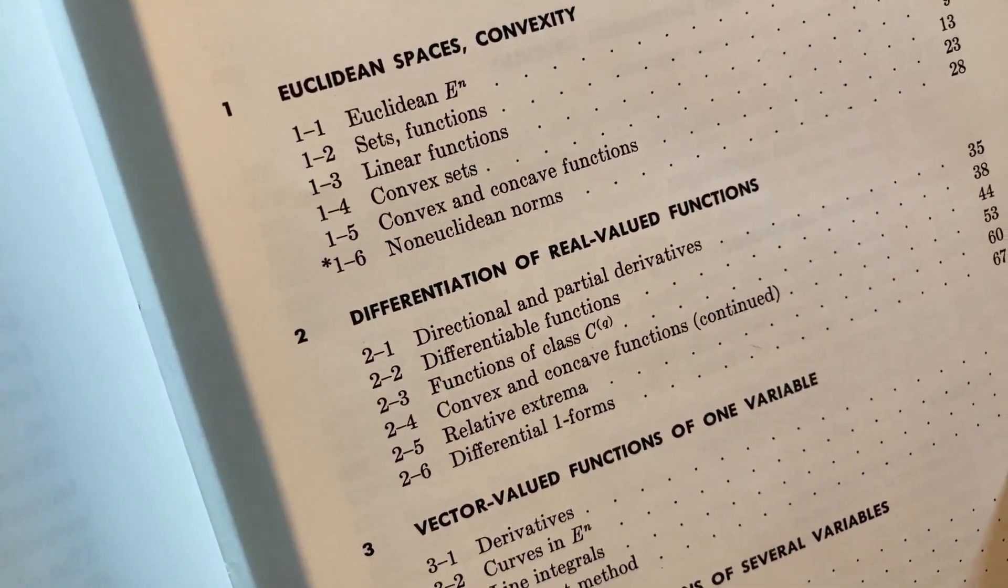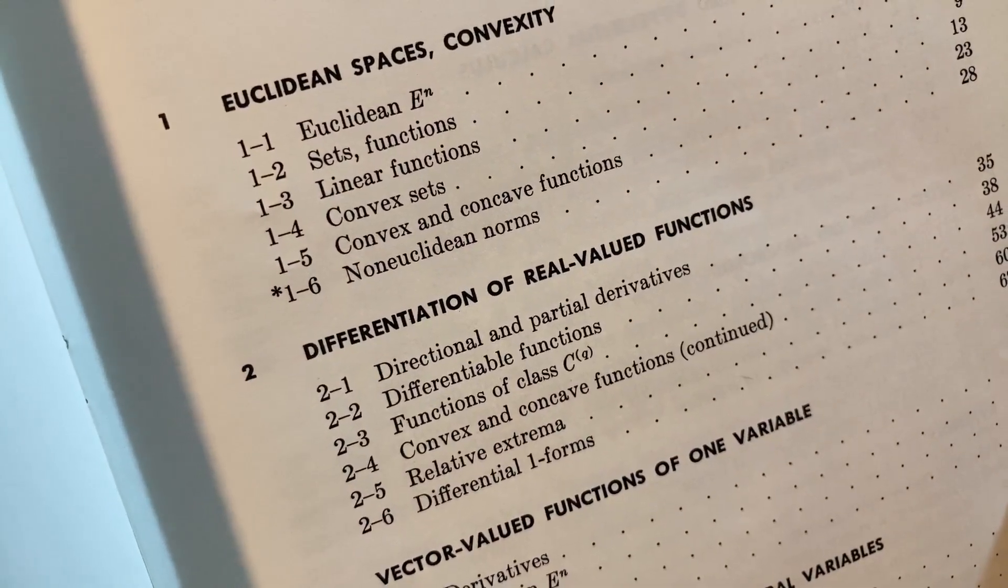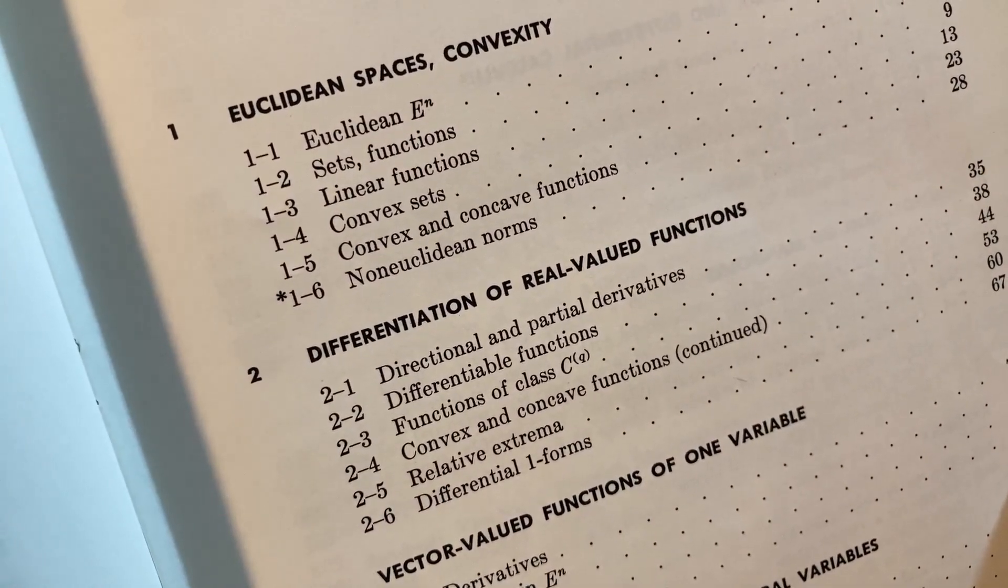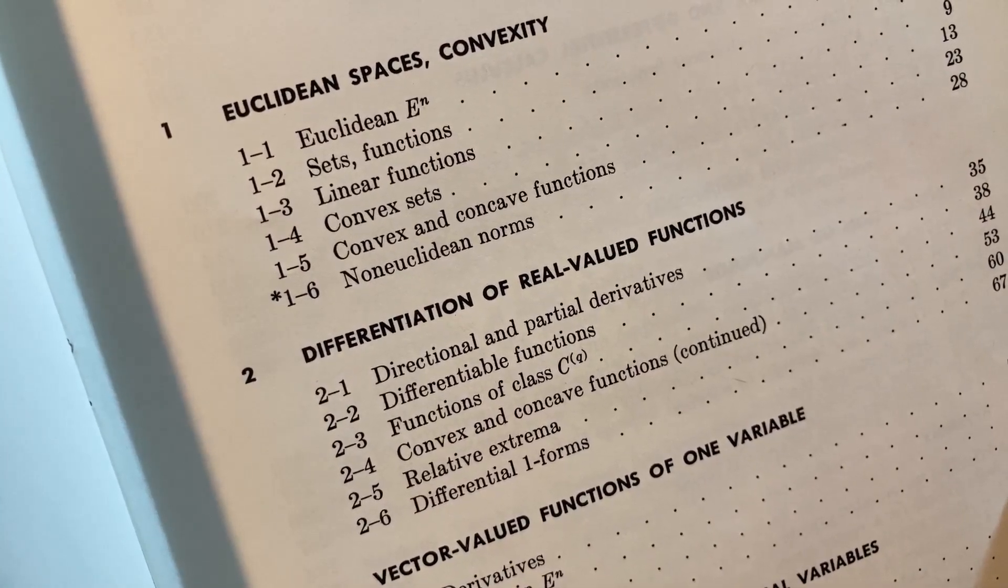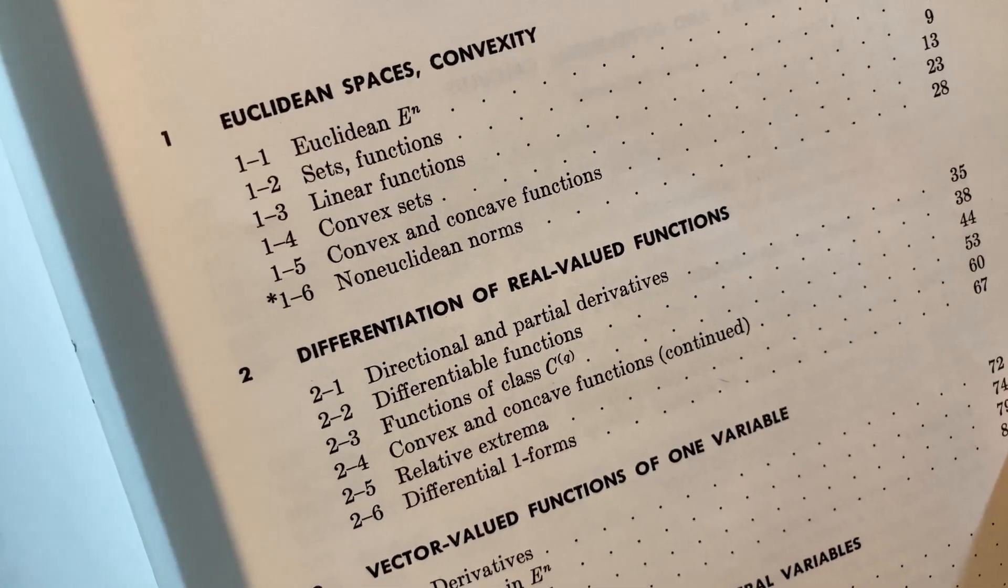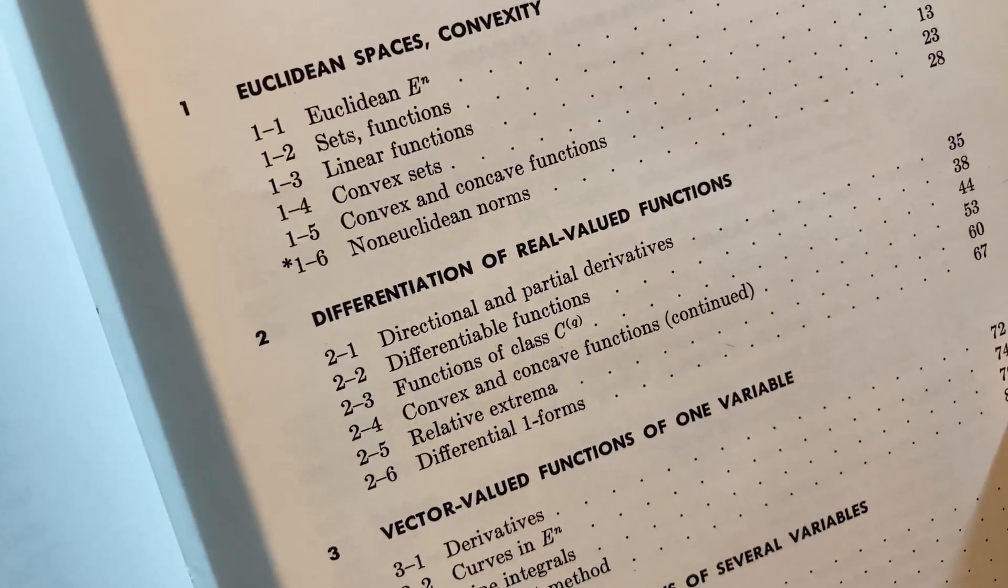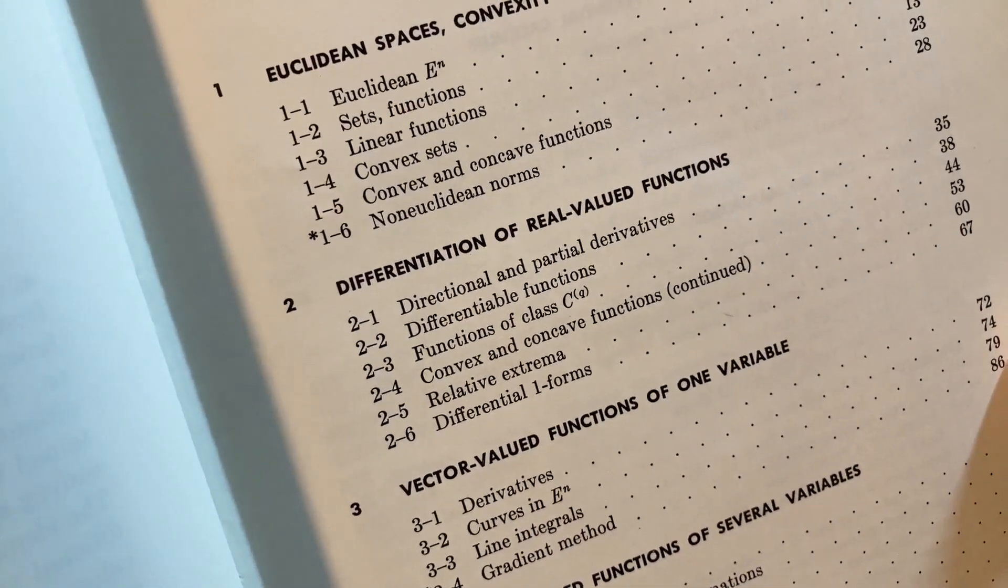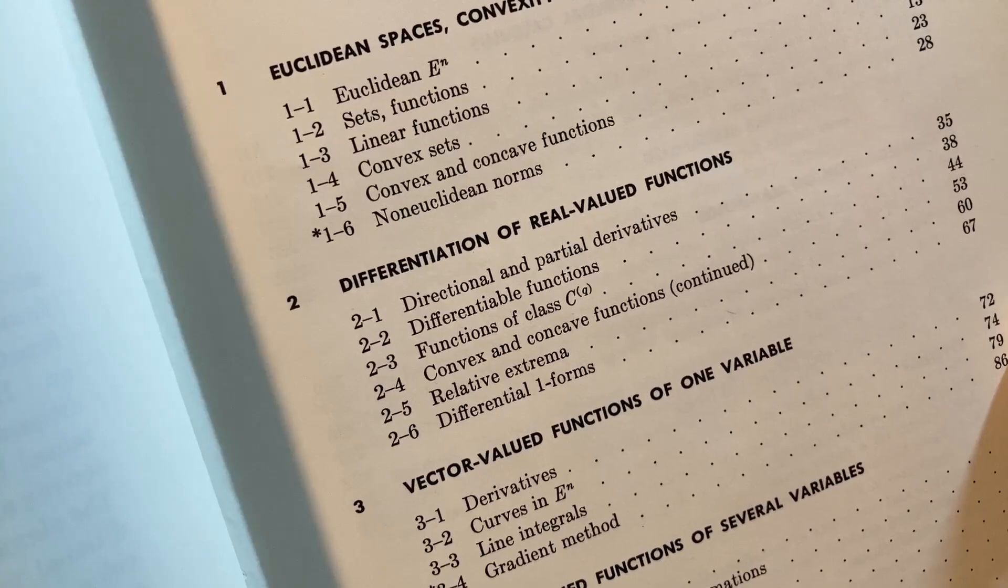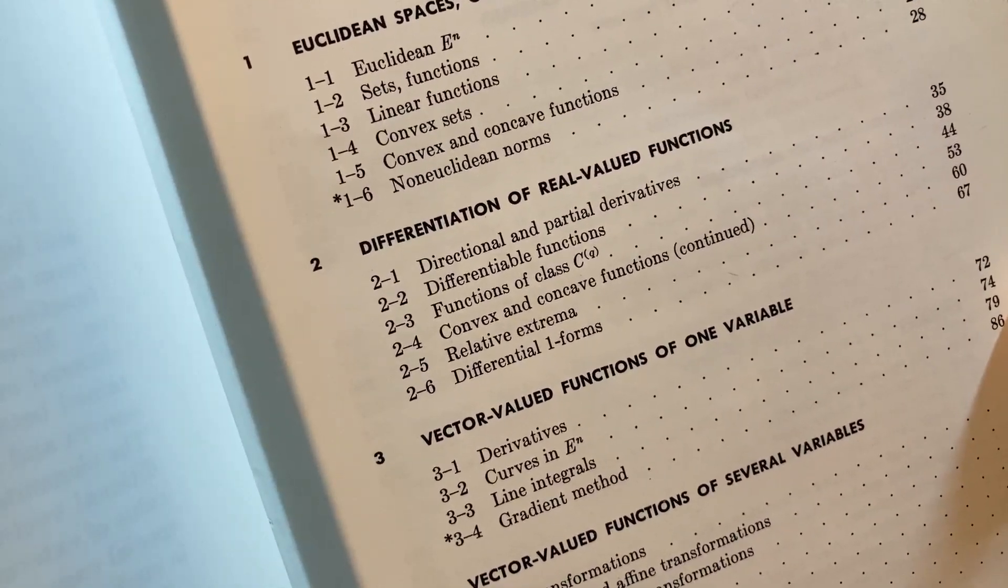Differentiation of real-valued functions: directional and partial derivatives, that's something that you would have seen if you took a Calculus 3 course. Differentiable functions, functions of class C1, convex and concave functions, relative extrema and differential one forms. Already, you're seeing some stuff here that you may have never heard of.